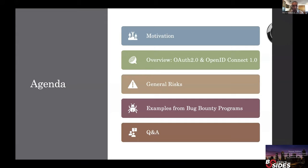The agenda for today: I'm going to start talking about why I'm giving this presentation, then give a brief overview of OAuth 2.0 and OpenID Connect. I'll talk about some general risks and mistakes with the OAuth protocol — design and implementation mistakes — and then give some examples from bug bounty programs, which ties into the title of this presentation: lessons learned from bug bounty programs.